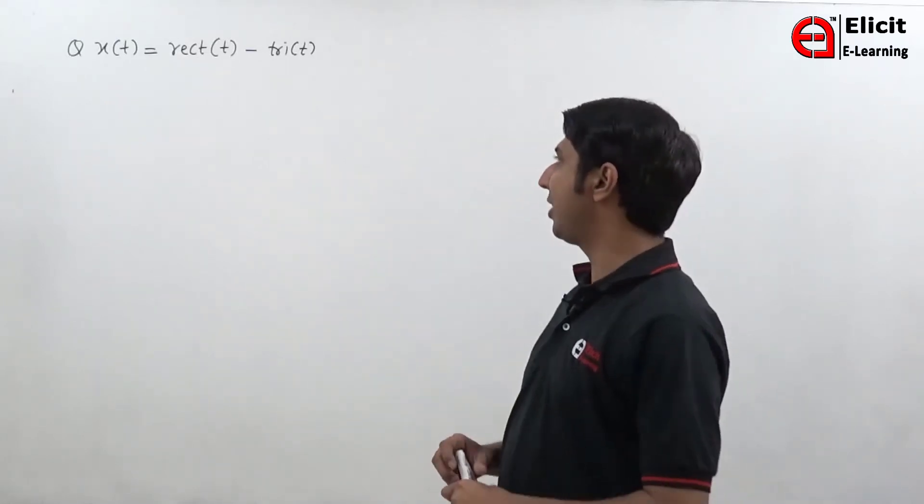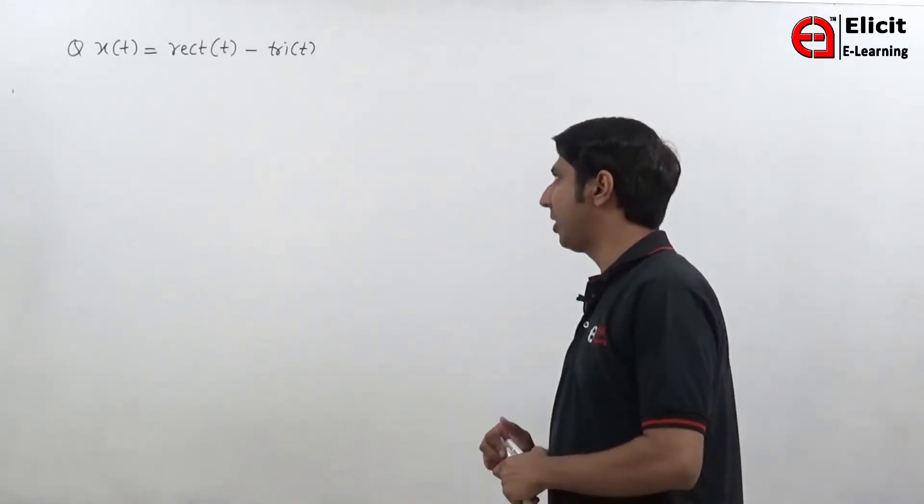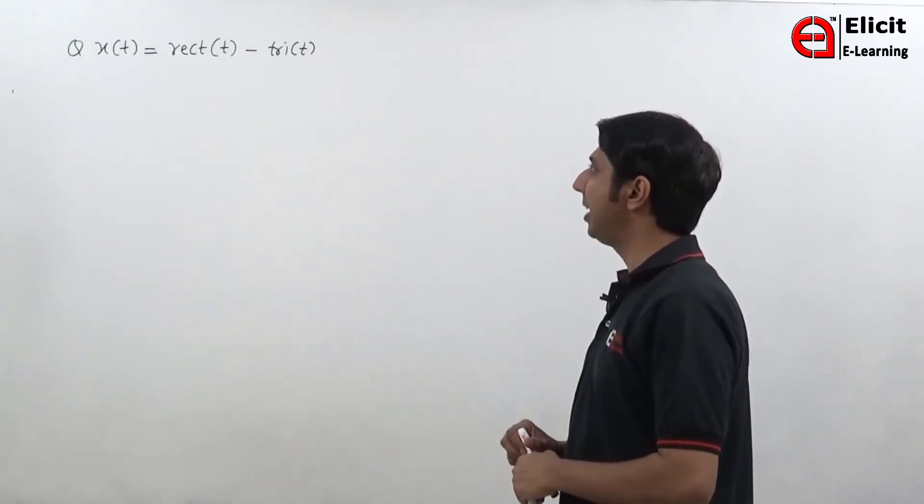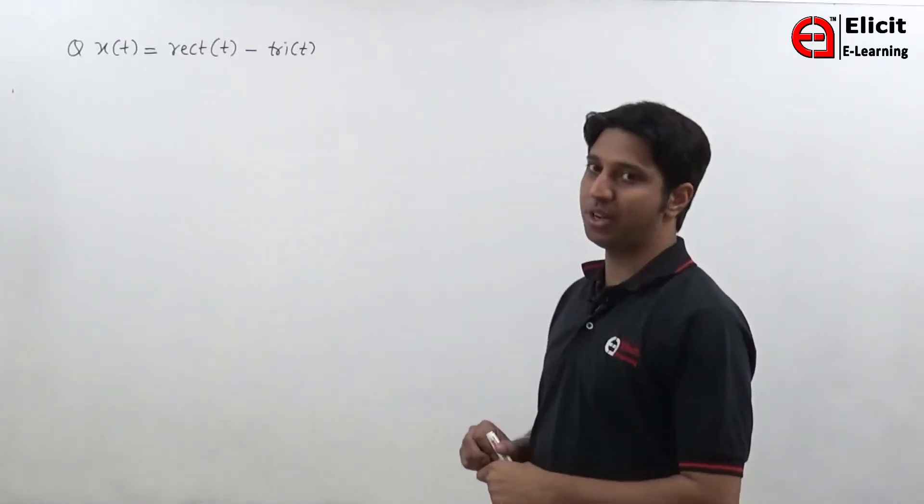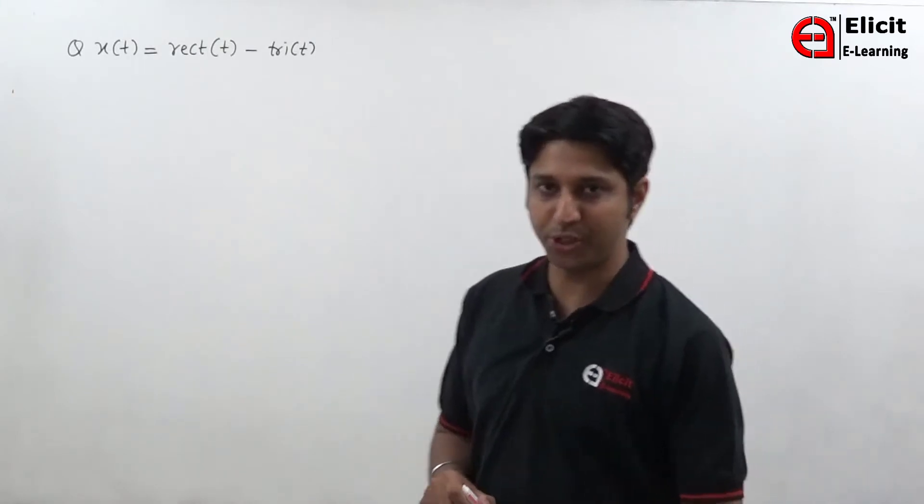Now let us take the next question. x of t is equal to rect of small t minus tri of small t. We have to perform this operation.